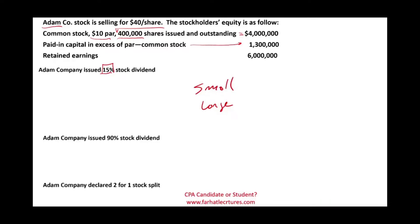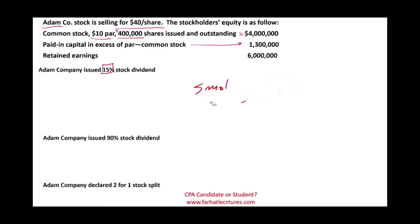How do we determine whether a stock dividend is small or large? If the stock dividend is 20 to 25% or less, we consider it small. If it's greater than 20 to 25%, we consider it large. If it falls between 20 to 25%, you make a judgment — but usually they don't give you that type of question on the CPA exam. Just know that here we are dealing with a small stock dividend.